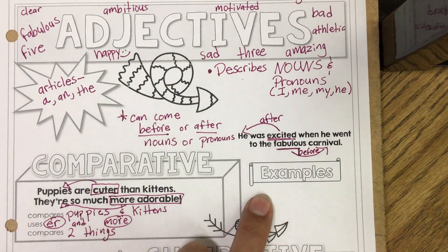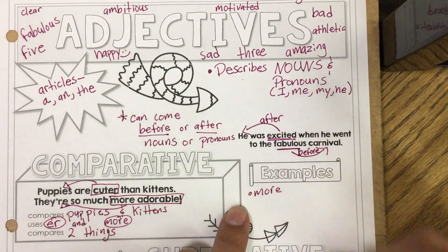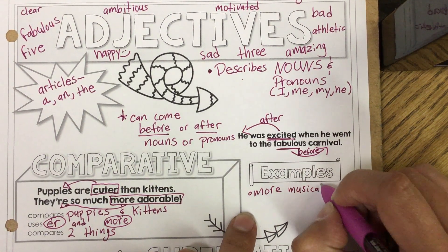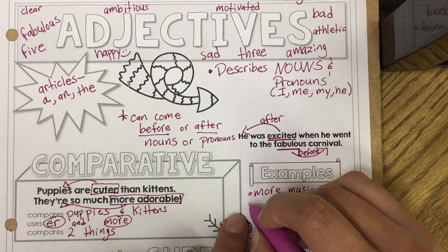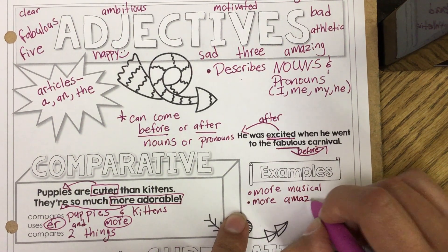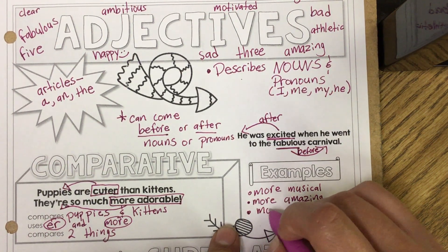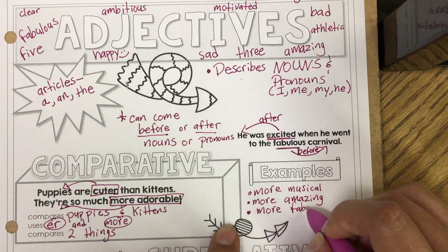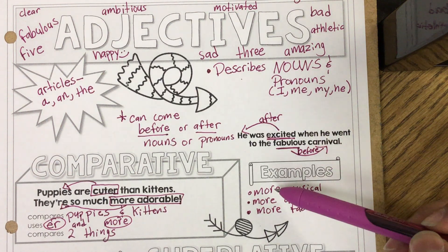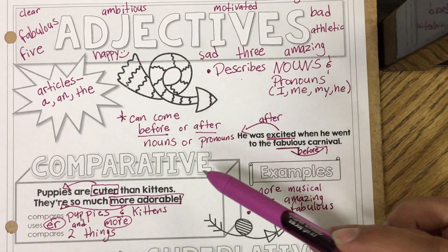For examples of comparative adjectives, please write these with me: more musical — that's a comparative adjective. More amazing. More fabulous. Remember, these are comparative adjectives because they start off with the clue word 'more.' More musical, more amazing, more fabulous are all comparative adjectives.